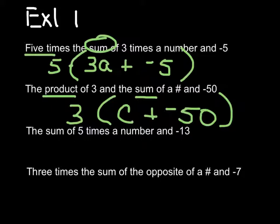And the next one, the sum of 5 times a number and a negative 13. So, take 5 times a number. I'll use n for the number. Take a negative 13 and take the sum of those two.